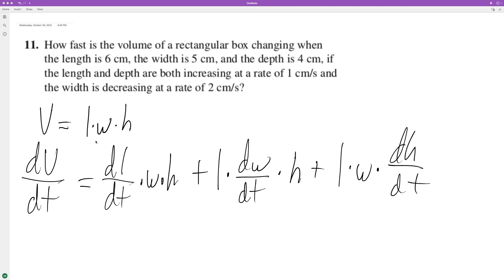So if you look here, we've got the equation for this rectangular box. Volume equals length times width times height, and the derivative is kind of like the product rule. So we start with the length going to the width and then the depth or height.